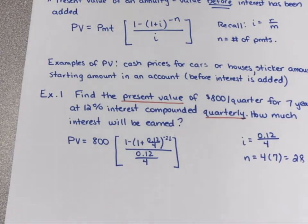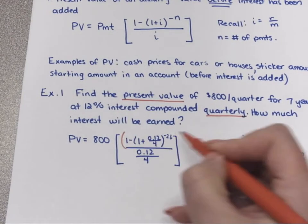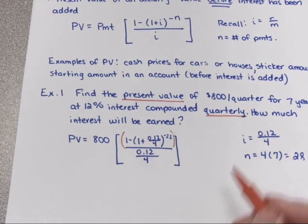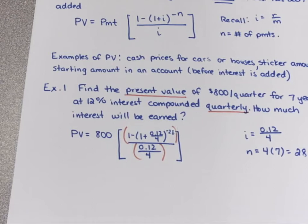To make sure your calculator does it right, you need parentheses around the numerator and denominator. Anything with more than one part should be surrounded with parentheses. In this case both the top and bottom have more than one part. Treat brackets like parentheses when entering into the calculator.